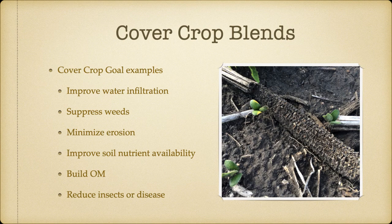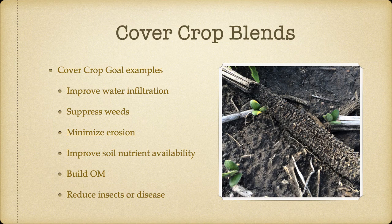Some examples of what goals to be setting: Do we want to improve the water infiltration rates on that soil? Do we want to suppress weeds? Do we have a certain weed we want to suppress? Do we want to minimize erosion? Do we want to improve our soil nutrient availability? Do we want to build organic matter in our soil? Do we want to reduce insects or disease? When we see the picture on the slide, we see a little bit of residue but not a lot of surface soil aggregation, so water infiltration is going to be a problem. There's a lot of bare ground, so we're going to want to suppress those weeds.